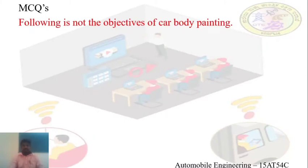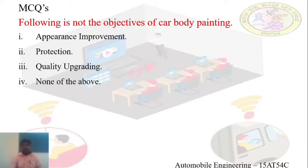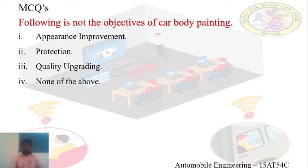The last question of this video session is: which of the following is not an objective of car body painting? You should identify which is not the objective of car body painting. The options are: appearance improvement, protection, quality upgrading, and none of the above. The objectives of car body painting are improving appearance, protecting the vehicle from atmospheric conditions, and quality upgrade. So the first three options are correct, and the answer is the fourth option — none of the above.